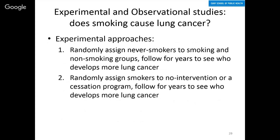As an example: does smoking cause lung cancer? If you wanted to address this directly with an experimental approach, you would have to intervene. One way to design such a study would be to take never-smokers and randomly assign them to smoking and non-smoking groups, follow them over a number of years, and see which group develops more cancer. This would be a very direct way of observing it, but it has never been done because it's obviously not an ethical study.